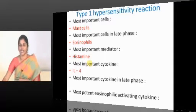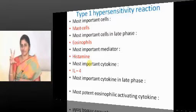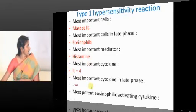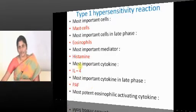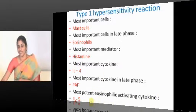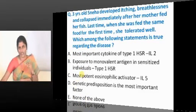What is the purpose of IL-4? IL-4 will drive the differentiation of B cells towards IgE-producing plasma cells. Most important cytokine in late phase is platelet activating factor. Most potent eosinophilic activating cytokine is IL-5. IL-5 is the growth factor for eosinophils. Coming back to our question.